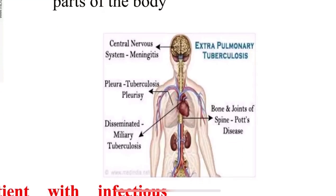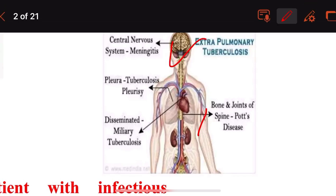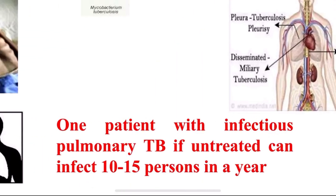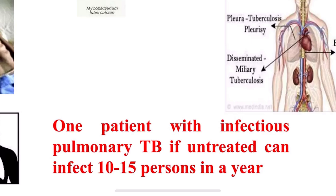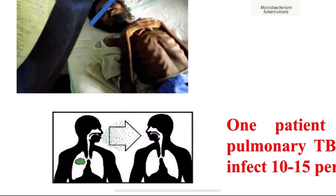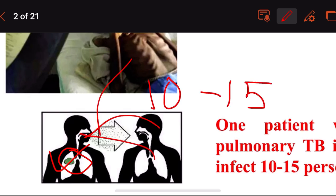When TB affects other parts beyond the lungs, it is known as extra-pulmonary tuberculosis. For example, it can affect the central nervous system resulting in meningitis, and also the bones and joints. TB of the spine is known as Pott's disease. One patient with infectious pulmonary TB, if untreated, can infect 10 to 15 persons in a year.